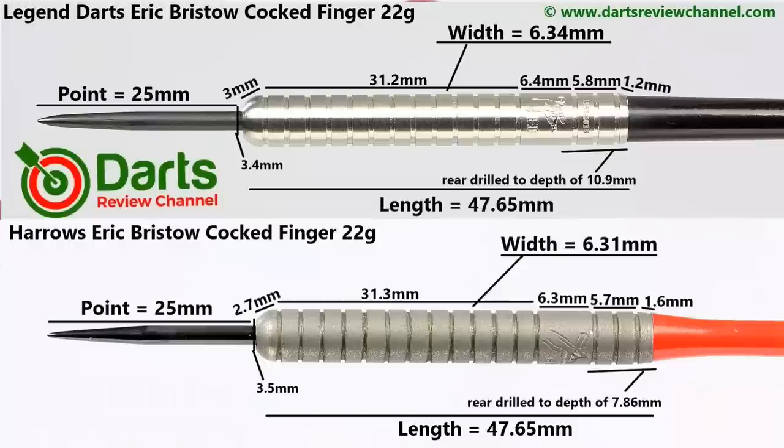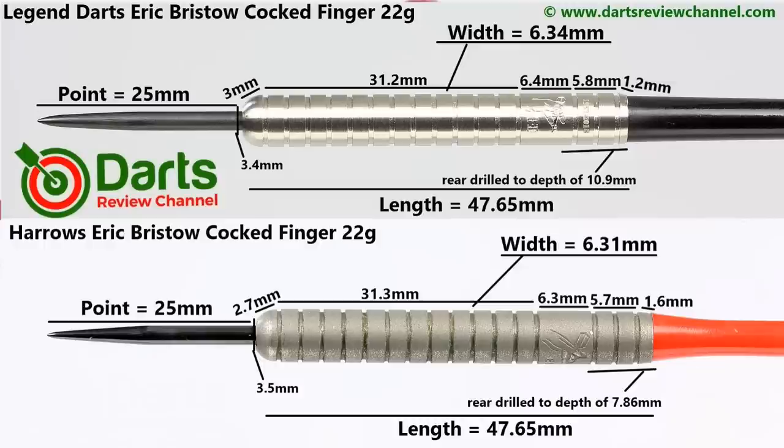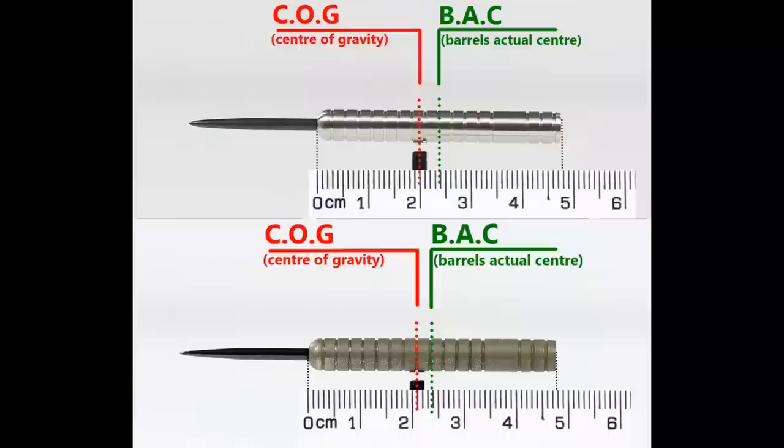Here's the dimensions of both the old and the new Eric Bristow cocked finger darts, and I'll let you peruse that as you want, so you can pause the video there if you need to. These are the balance points side by side. As you can see, the old one's slightly different, but I think it's because the old one is drilled out a little less from the rear.